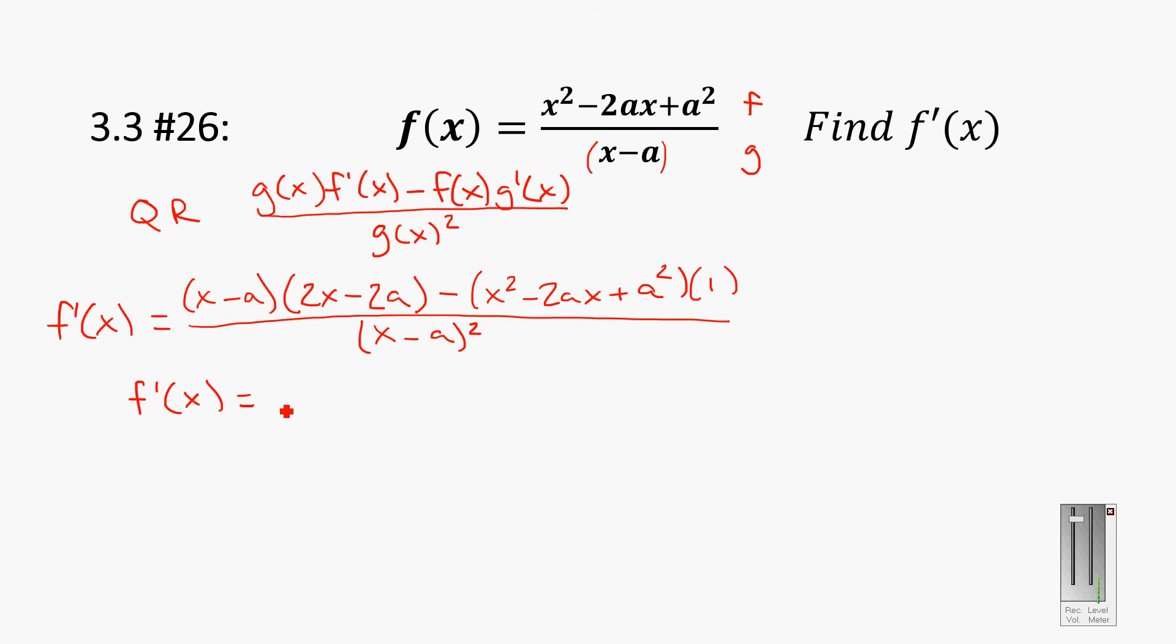2x times x is 2x squared. x times negative 2a is negative 2ax. Negative a times 2x is negative 2ax again. And then finally, negative a times negative 2a is negative 2a squared. Negative 2a squared. All right. I think we're looking good so far. Well, hold on a second. I've got to make sure I didn't screw that one up here. Negative a times negative 2a is actually a positive 2a squared.